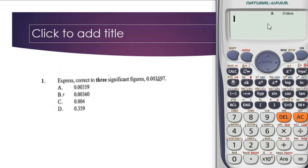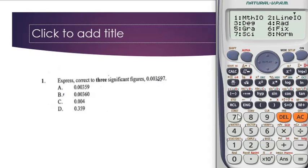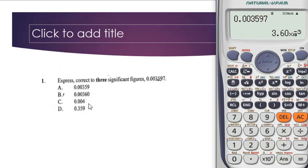The next question is already in three significant figures once entered. Punch in the value 0.003597, then click equals. You can see it's already at three significant figures. Click 7 then choose 3 to confirm. The answer shown doesn't match the options, so click Shift then the Eng button, then Shift and Eng again to convert it.